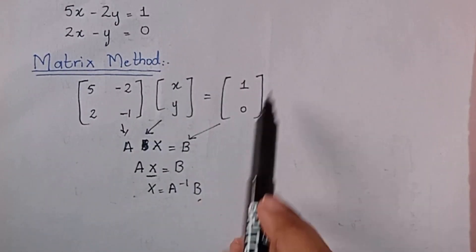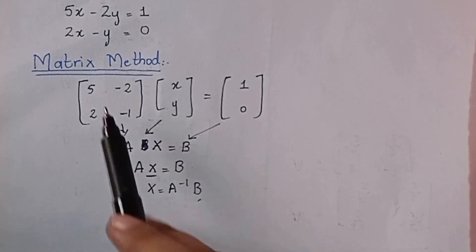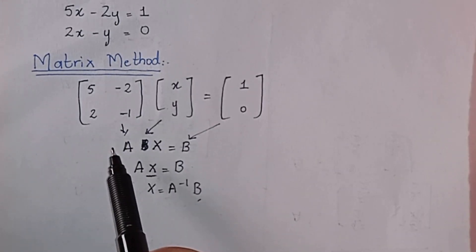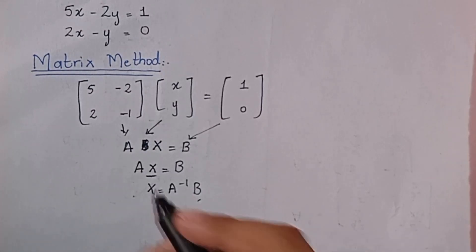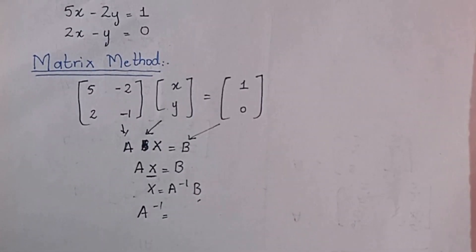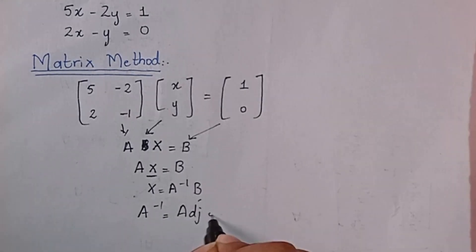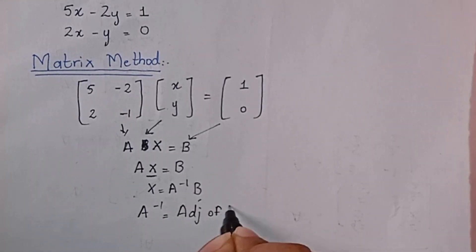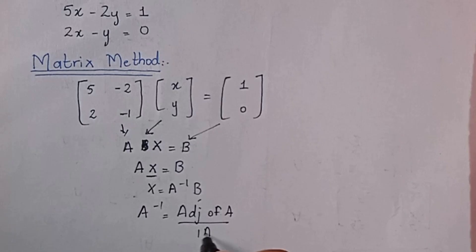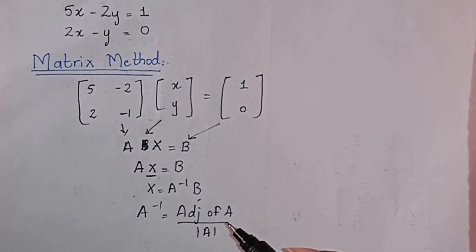We have the B matrix, but we do not have A inverse yet. To find A inverse, we use the formula from the previous video: A inverse = adjoint of A divided by the determinant of A. It is very important that you watch the previous videos on multiplicative inverse and determinant.